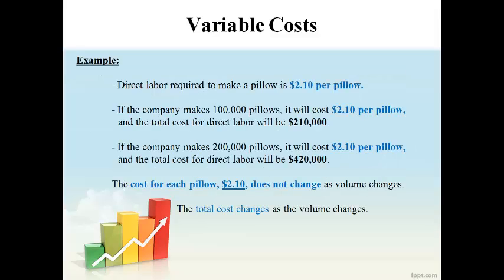A variable cost is the same for each unit made. In this example, direct labor cost is $2.10 each time a pillow is made. The quantity of pillows made multiplied by the variable cost per unit equals the total variable cost. As the number of pillows increases, the total cost of direct labor increases proportionately. The cost for one pillow does not change.